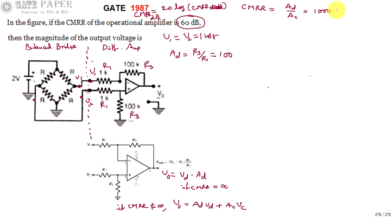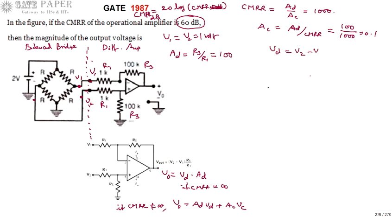The common mode gain AC = AD / CMRR = 100 / 1000 = 0.1. Now, VD = V2 − V1 = 1 − 1 = 0 volts. VC = (V1 + V2)/2 = (1 + 1)/2 = 1 volt. So 1 volt is applied commonly to both inputs, which is the common mode input.